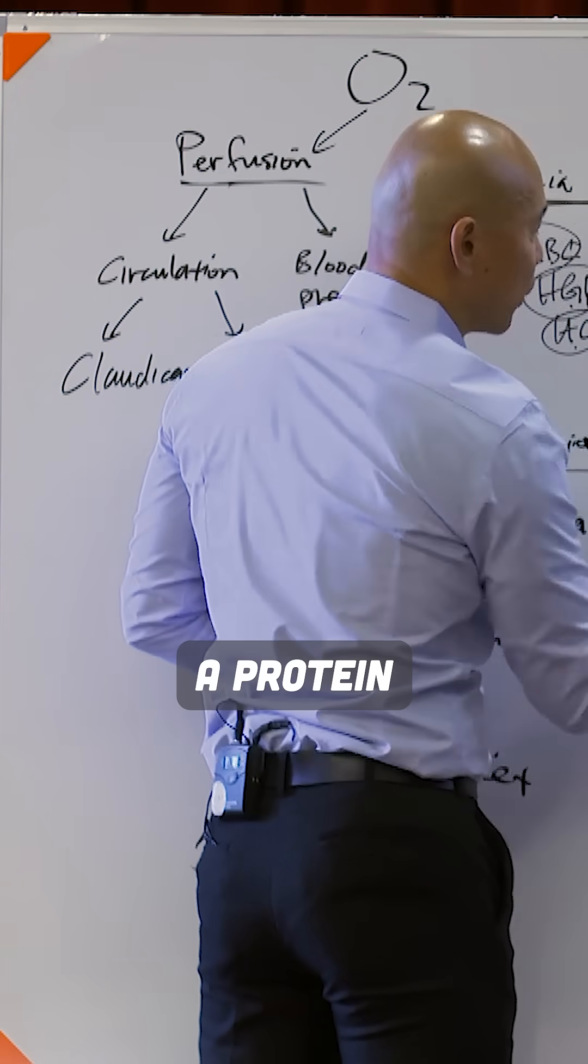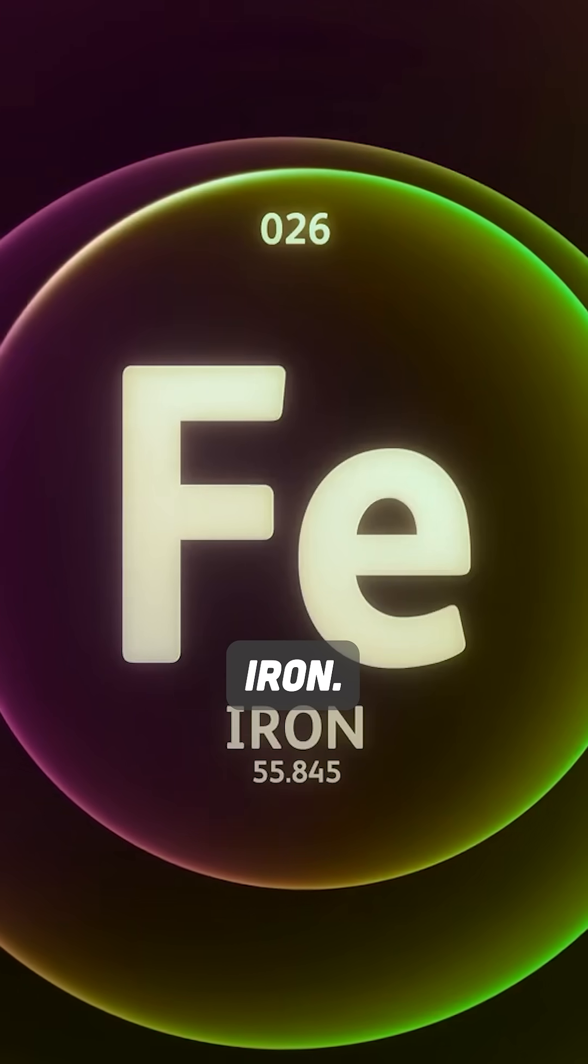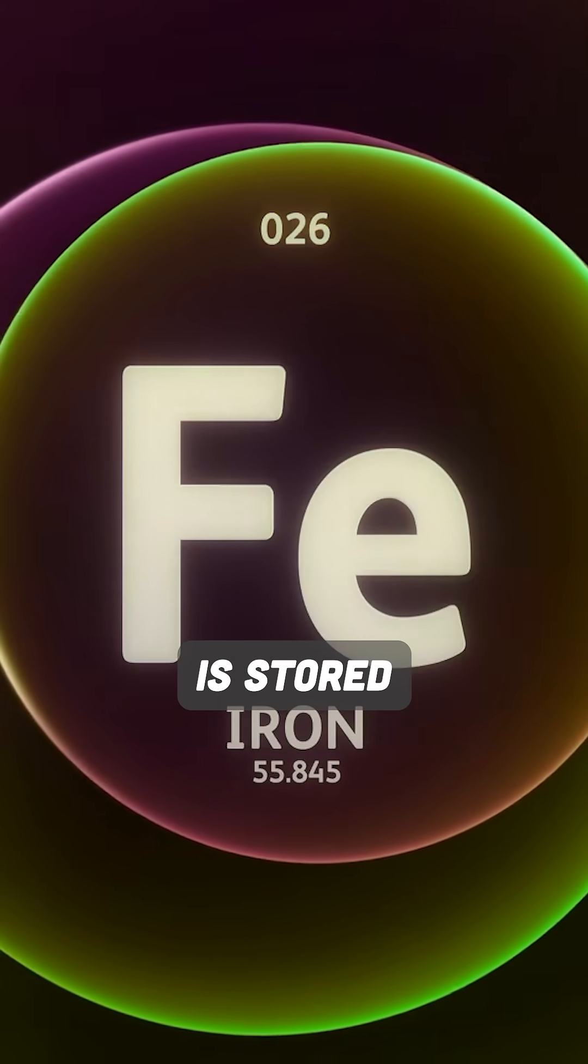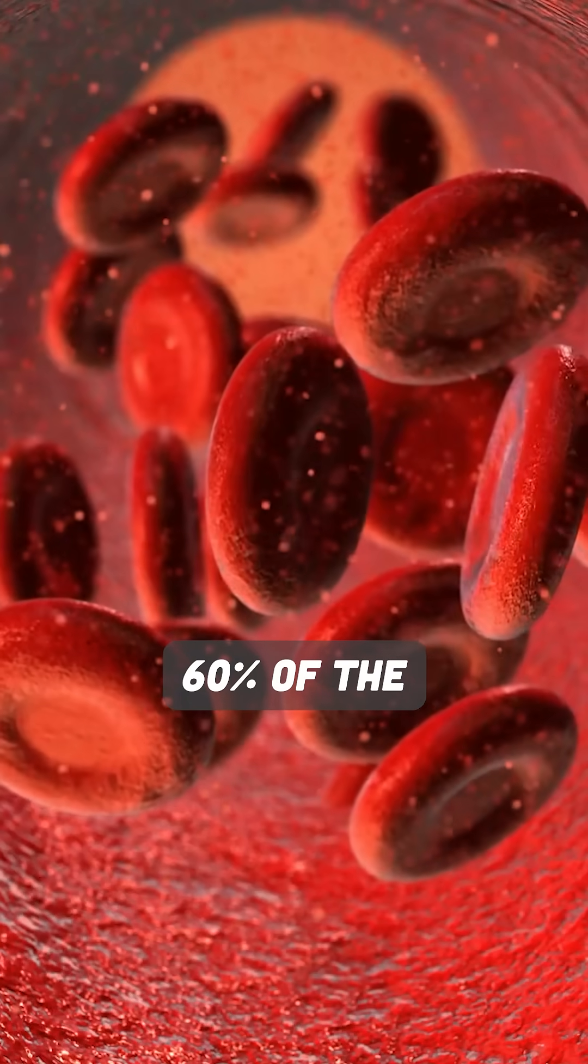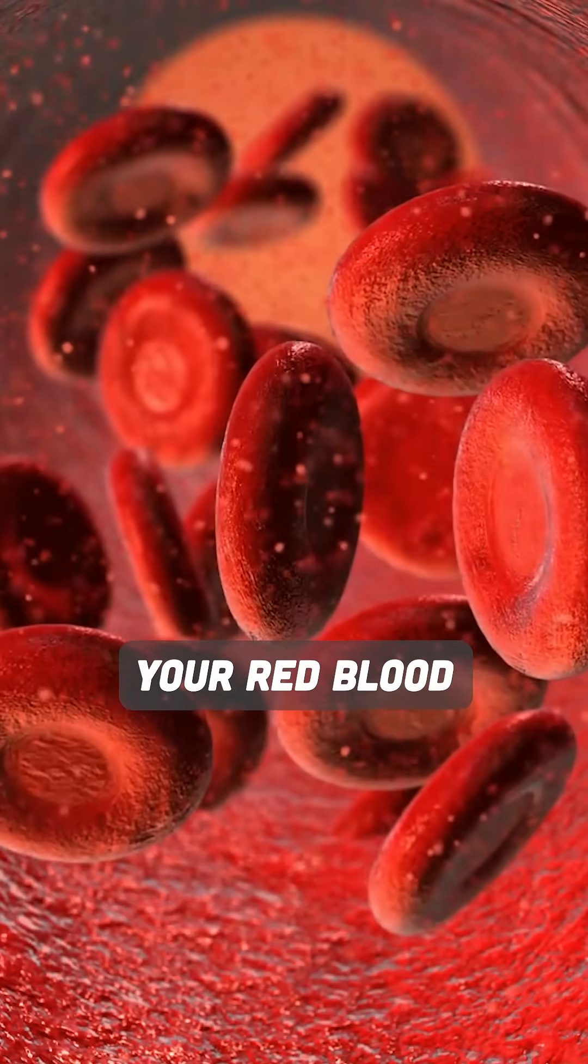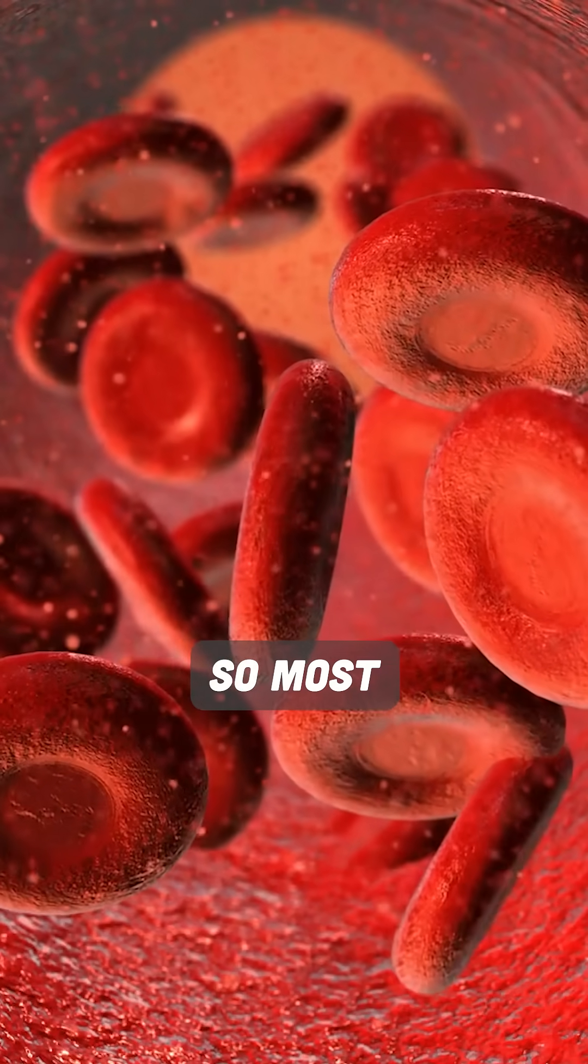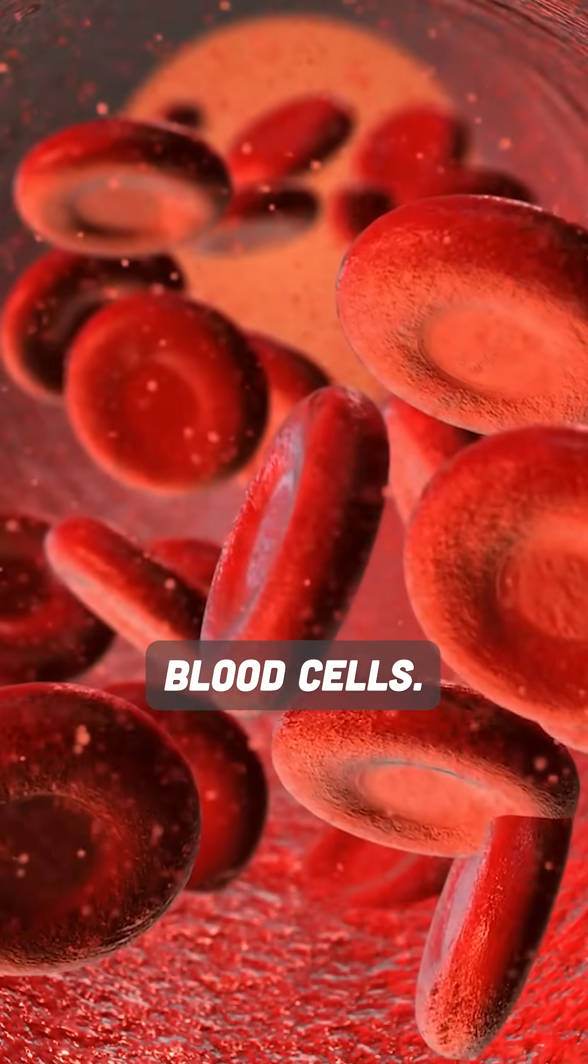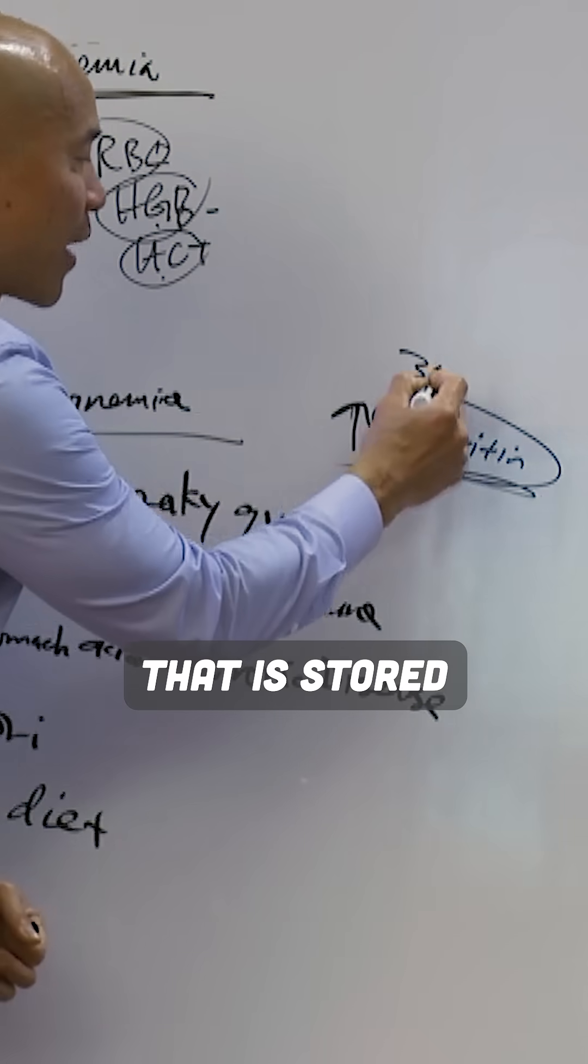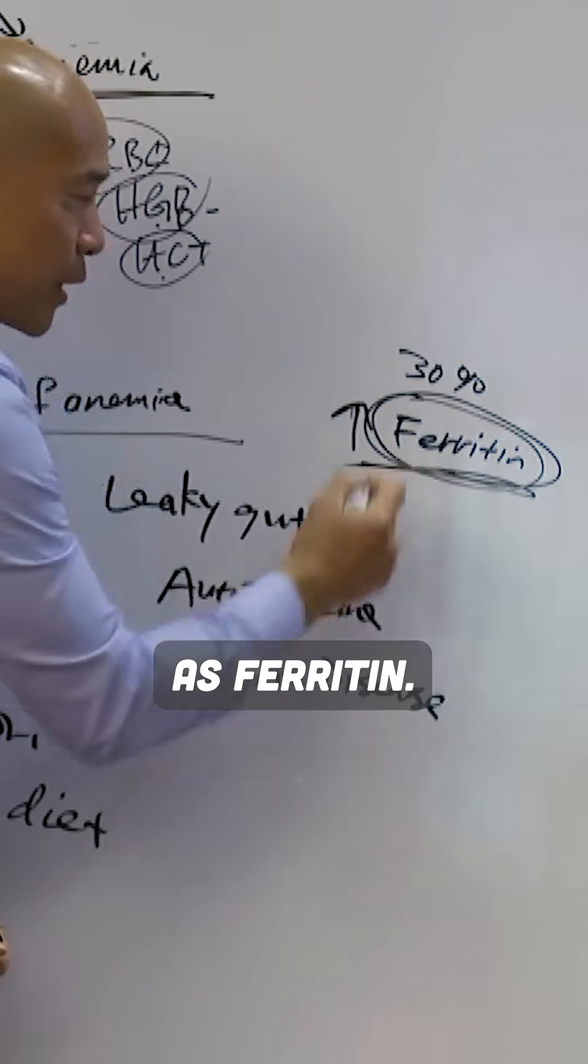Ferritin is a protein that carries iron. About 30% of the iron in your body is stored as ferritin, and another 60% is in your red blood cells, stored as hemoglobin. So most of the iron in the body is in your blood cells, but 30% is stored as ferritin.